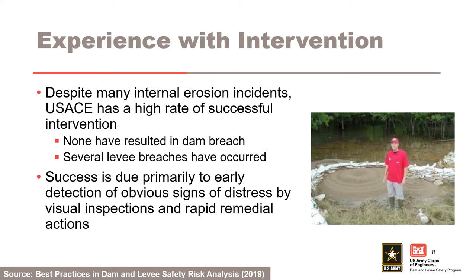Despite many internal erosion incidents, USACE has a high rate of successful intervention. None has resulted in dam breach. However, several levee breaches have occurred. Success is due primarily to early detection of obvious signs of distress by vigilant inspections and rapid remedial actions. Rapid remedial actions have included drawdown of the reservoir, such as at Worcester Dam and East Branch Dam, placement of sandbag rings around seepage exits, and placement of filter materials over seepage exits.